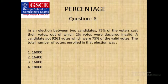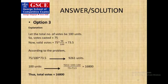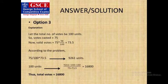Time for question 8: In an election between two candidates, 75 percent of the voters cast their votes, out of which 2 percent votes were declared invalid. A candidate got 9261 votes, which were 75 percent of the valid votes. The total number of votes enrolled in that election was. I think the question is clear. Just follow the solution slide.